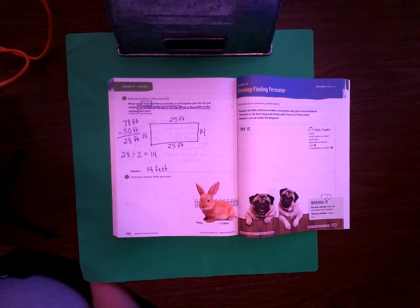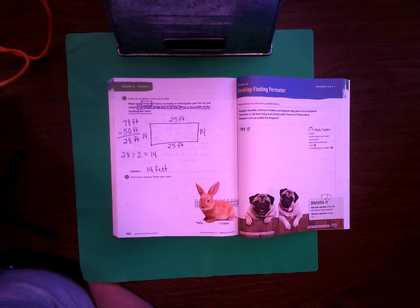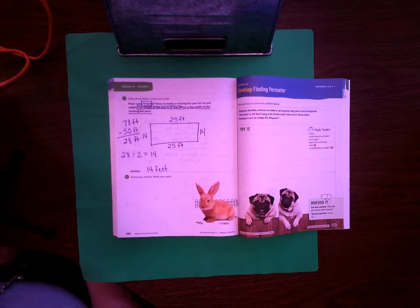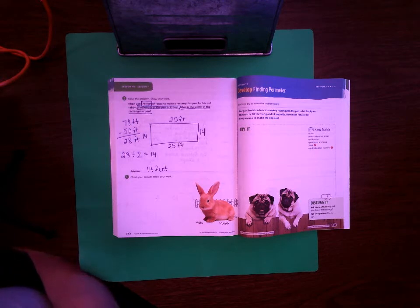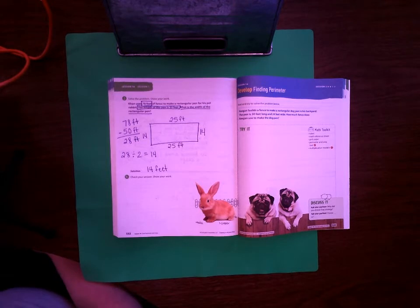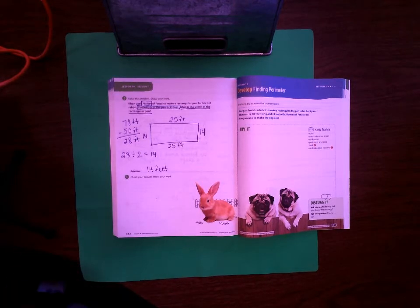Hello students, this is lesson 16 session 2 and we are going to be learning about finding the perimeter of a shape today. On these examples we are not always going to know both sides of the length and so sometimes we may have to find one of those lengths. We are on page 333 so if you turn your math book to that page we'll get started.